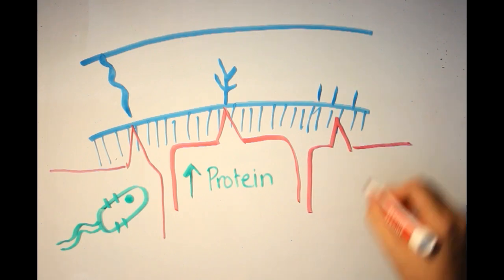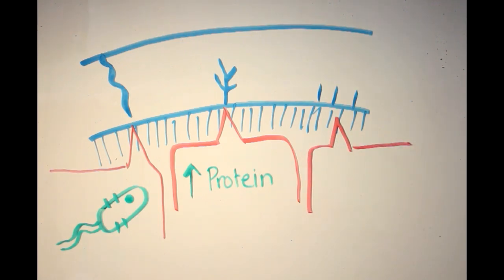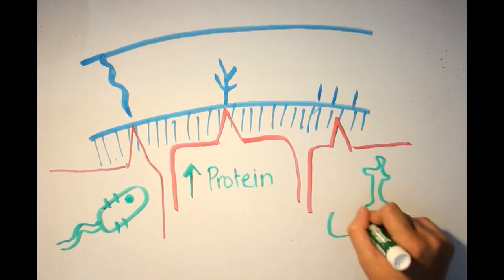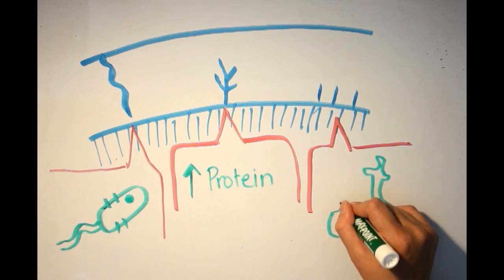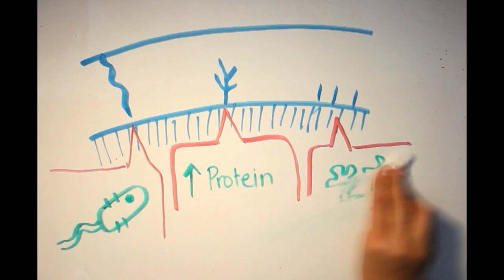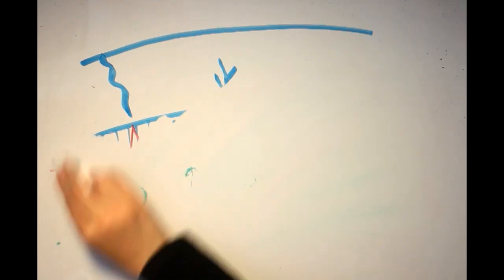Lastly, enamel spindles represent the trapped odontoblast processes that fail to withdraw during enamel mineralization. They appear as short, dark, finger-like extensions from the dentino-enamel junction into the enamel.